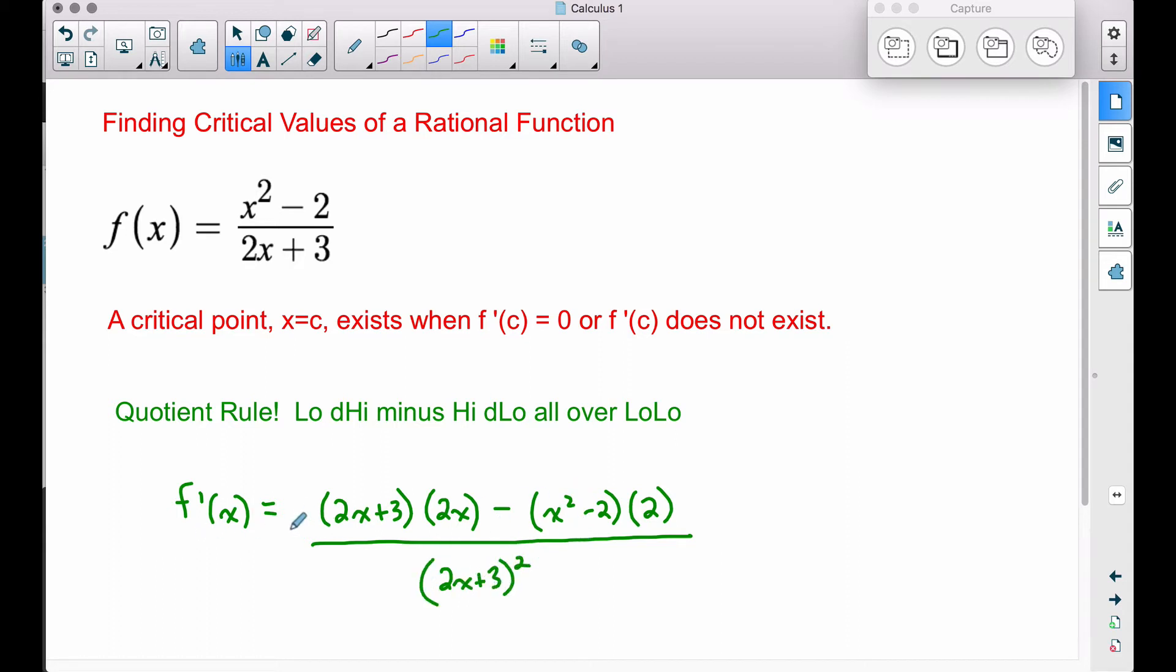Now we found our derivative. Now we want to find some values of x, and we can call them c, such that the derivative is equal to zero or the derivative does not exist. Well, the derivative does not exist when our denominator is equal to zero, so we can go ahead and address this part right here, which will give us a critical value, critical point.